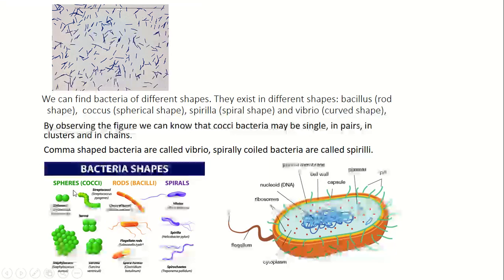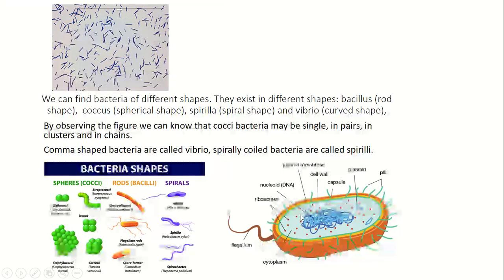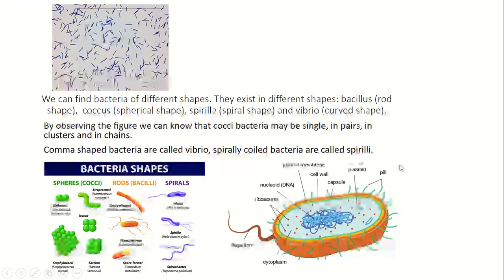Here we can see bacteria shapes and a typical structure of a bacterium. The structure includes: flagellum, cytoplasm, ribosomes, nucleoid or DNA, plasma membrane, cell wall, capsule, plasmid, and pili.